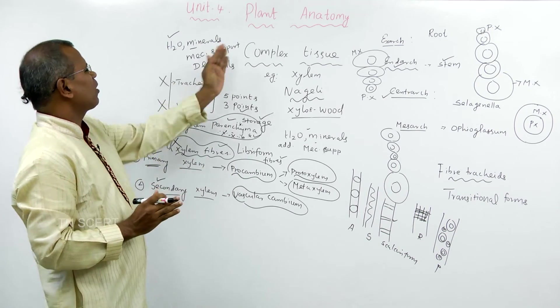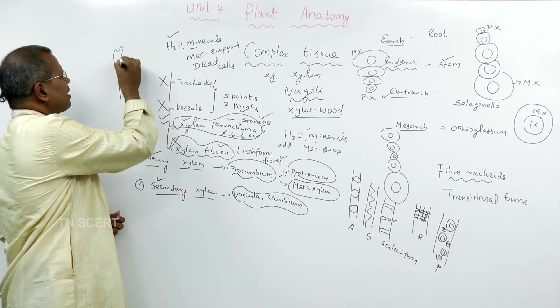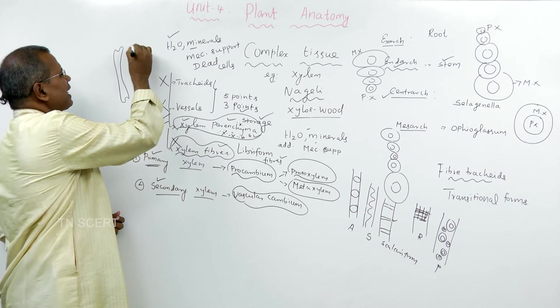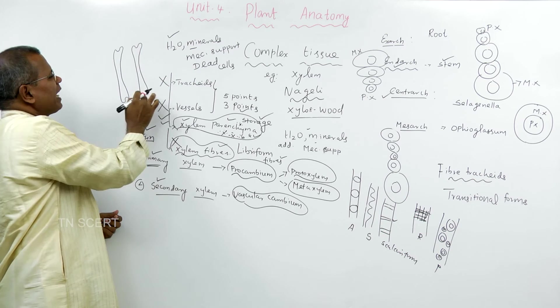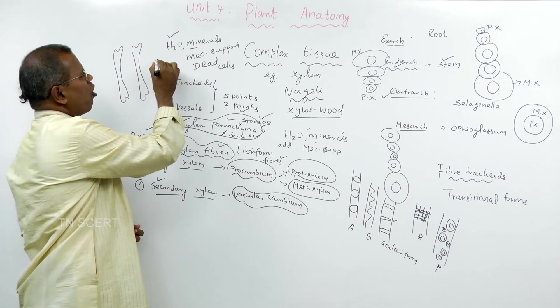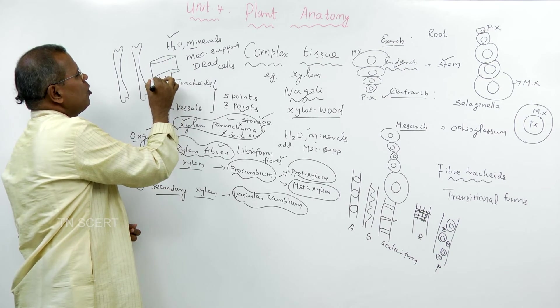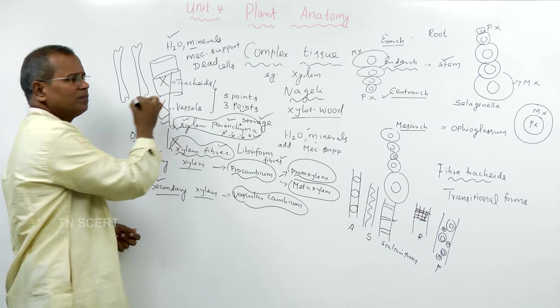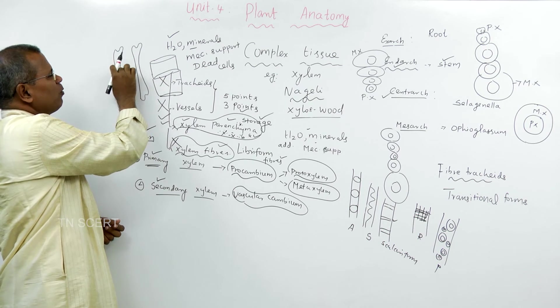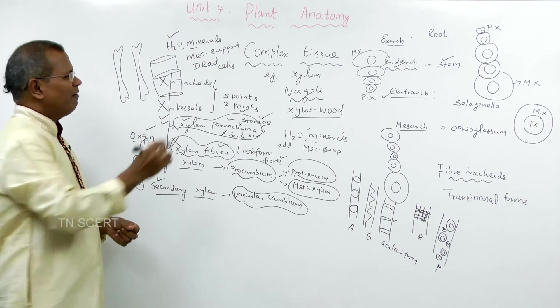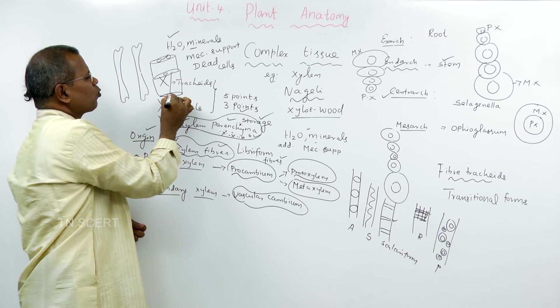Now the differences. Tracheids are the elongated tapering cells with blunt ends. Vessels are the pipeline-like structures. Tracheids are the imperforated cells. Vessels are the cells with perforation.